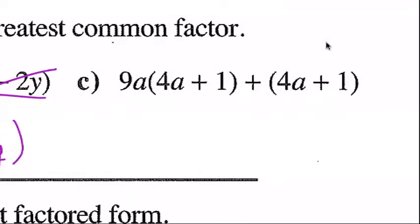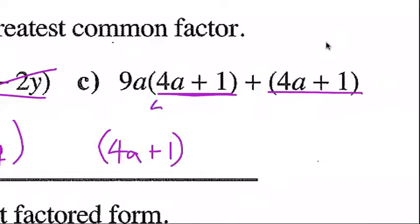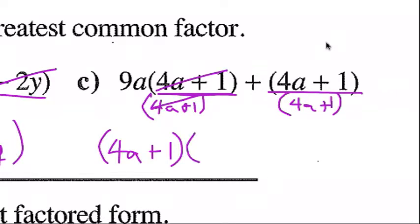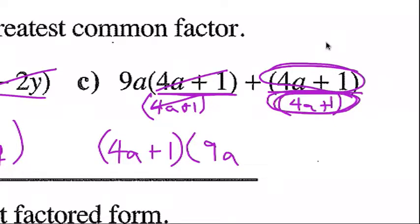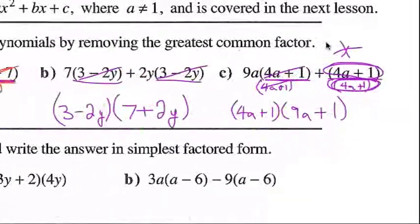Question c: 9a(4a + 1) + (4a + 1). They've put these in brackets for us. You can see (4a + 1) is common in both terms, so I factor it out by dividing each term by (4a + 1). Those cancel, leaving me with 9a, but (4a + 1) divided by (4a + 1) equals 1 — that is the most common mistake at this point in a factoring question, so be very careful.